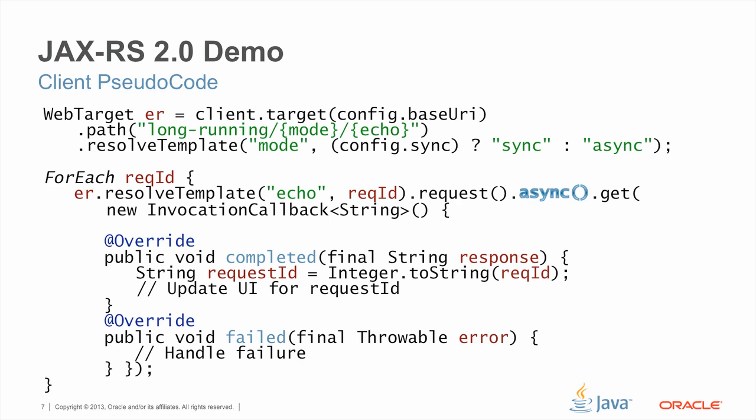Let's take a look at the client side. We're going to use the async feature on the client API so that we can issue multiple requests simultaneously, using the same client to simulate multiple clients running at the same time. We start by creating a web target that has two path parameters depending on the application's configuration. The user interface will allow us to change from sync to async as well as the number of requests. For every request we finish building it by specifying the request ID, then indicating that the request is going to be async using the Fluent API. Because it is async, we have to specify an instance of an invocation callback in which we're going to process the response. An invocation callback has two methods — either completed or failed — and in either case we update the user interface to indicate the completion or failure of the request.